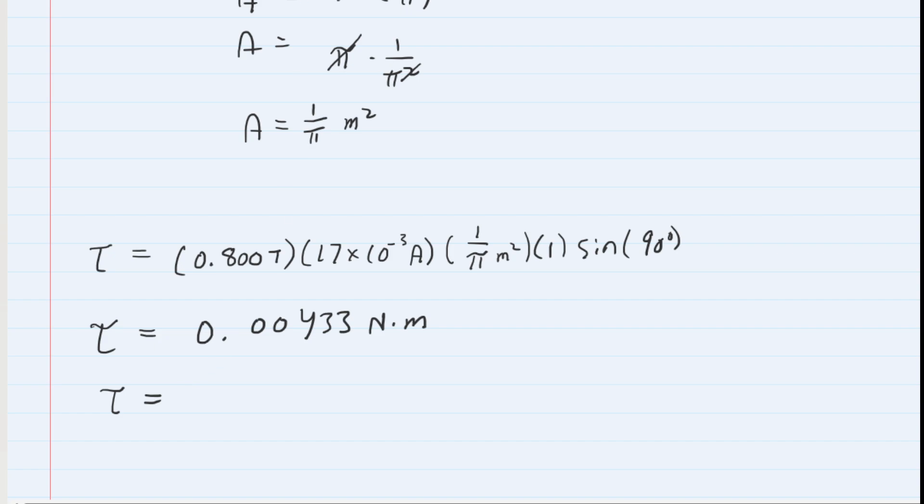If your homework system requires you to convert this into a millivalue, we'll use a conversion. 1 millinewton meter is 10 to the minus 3 newton meter. This may be unlikely, but just in case, when you do that you'll get 4.33 millinewton meter. Either version of the answer would be correct for the torque applied on that circular loop.